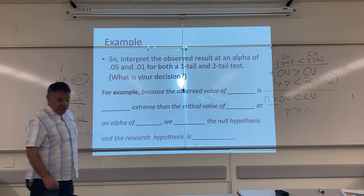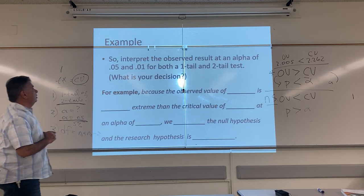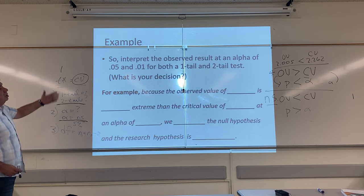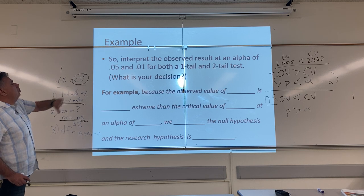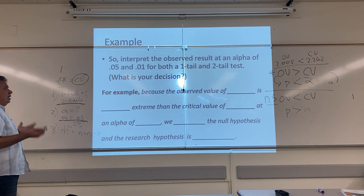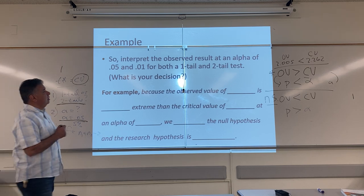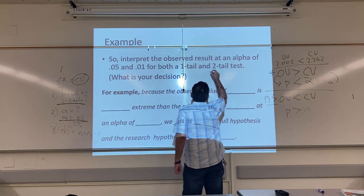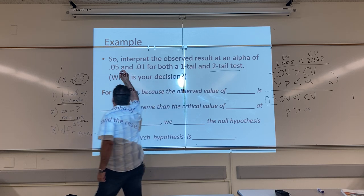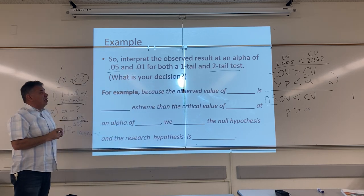All right. So, Jose, how would you write this up? So, we interpret the observed results at an alpha of 0.05 and 0.01 for both a one-tail and two-tail test. What is your decision? Well, we really did this, remember, when we really did this, we did it for a two-tail test at 5%. So, for our example,